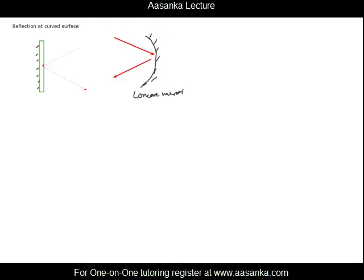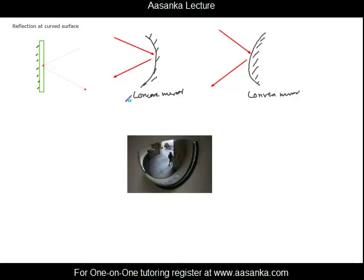If you have a surface which is polished on the outer side, then the light will come from one side and go off outward. Such surfaces are called convex mirrors. One common example of a spherical mirror is the rear view or side view mirror that you see in a car.